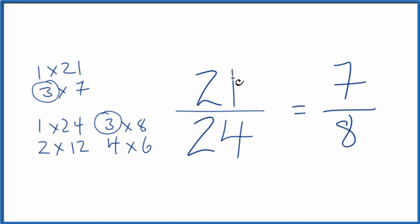So the fraction 21 24ths can be reduced or simplified down to 7 8ths. We can't reduce 7 8ths any further.